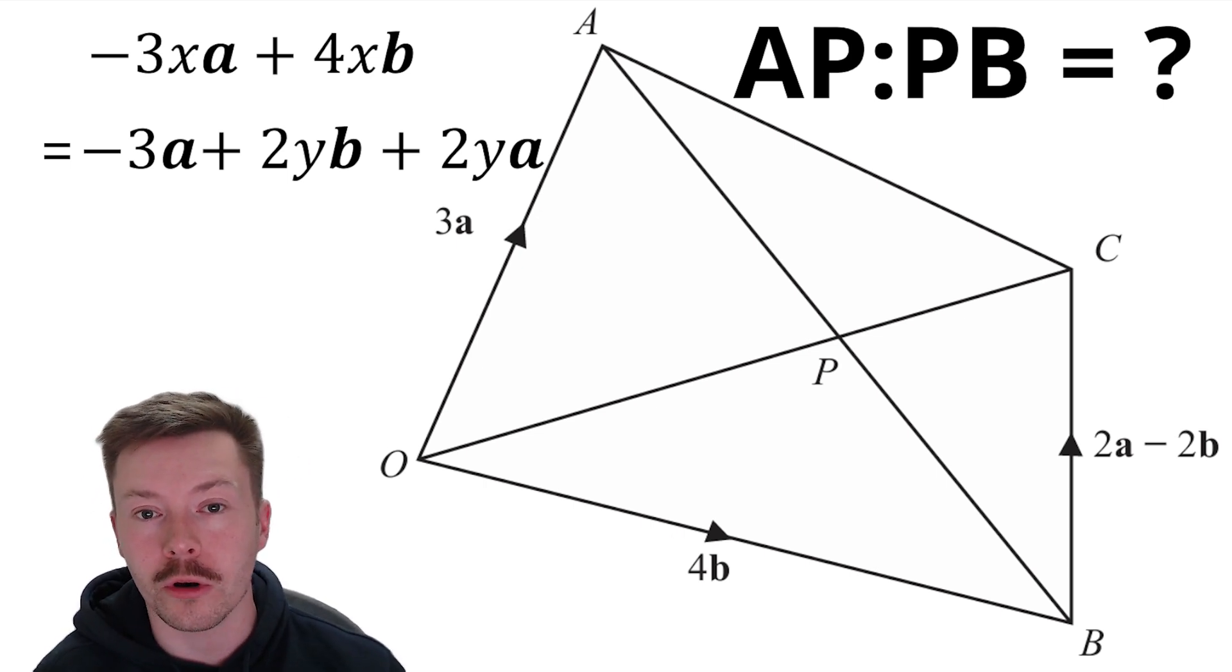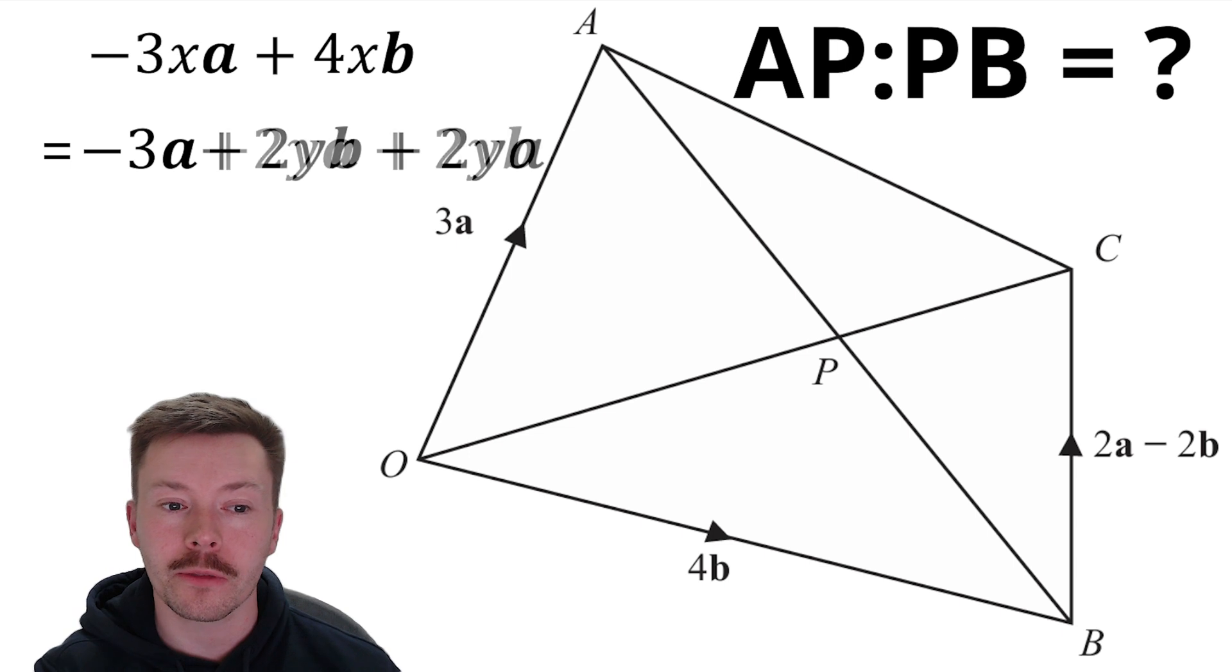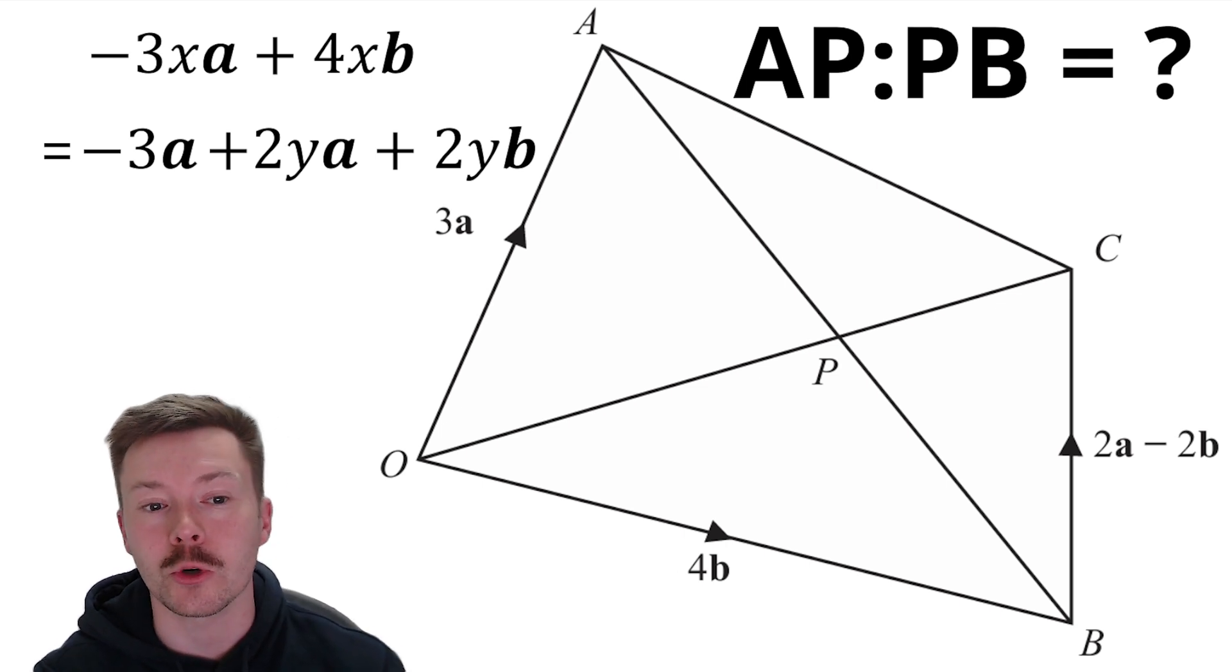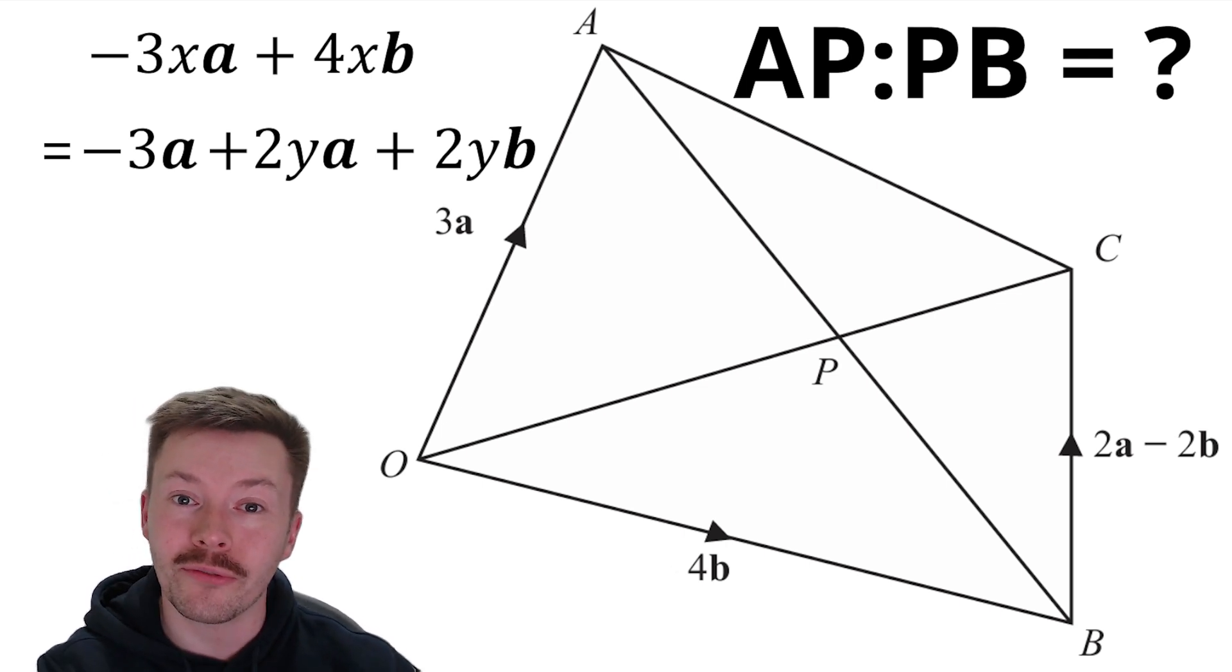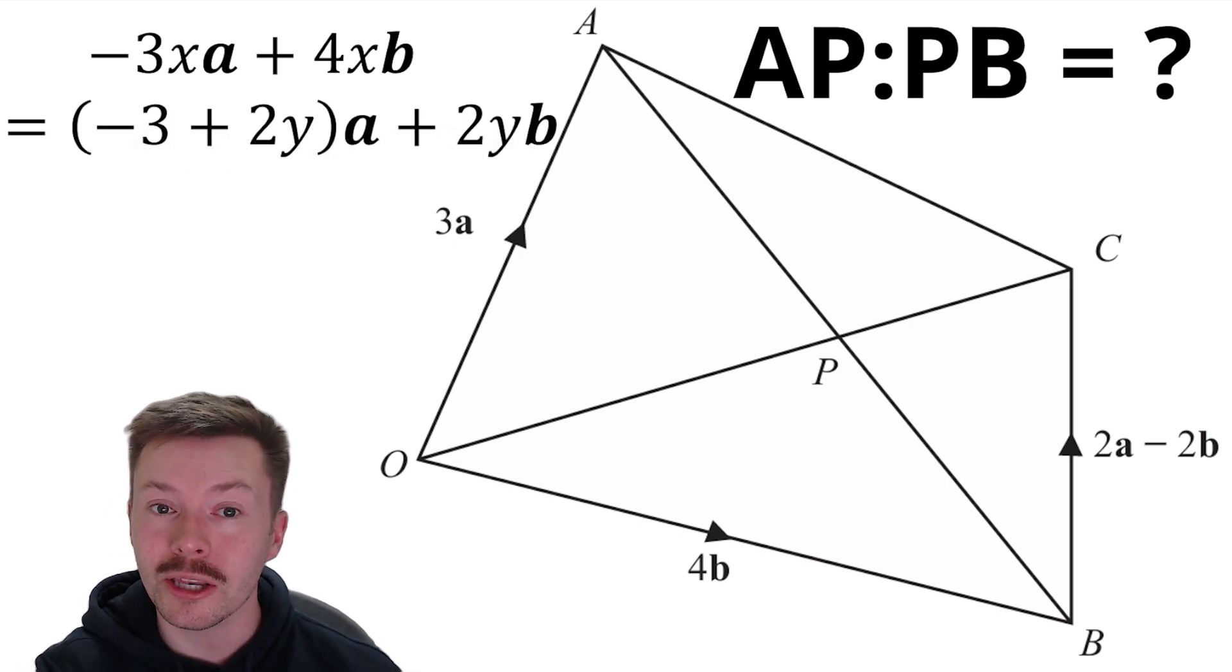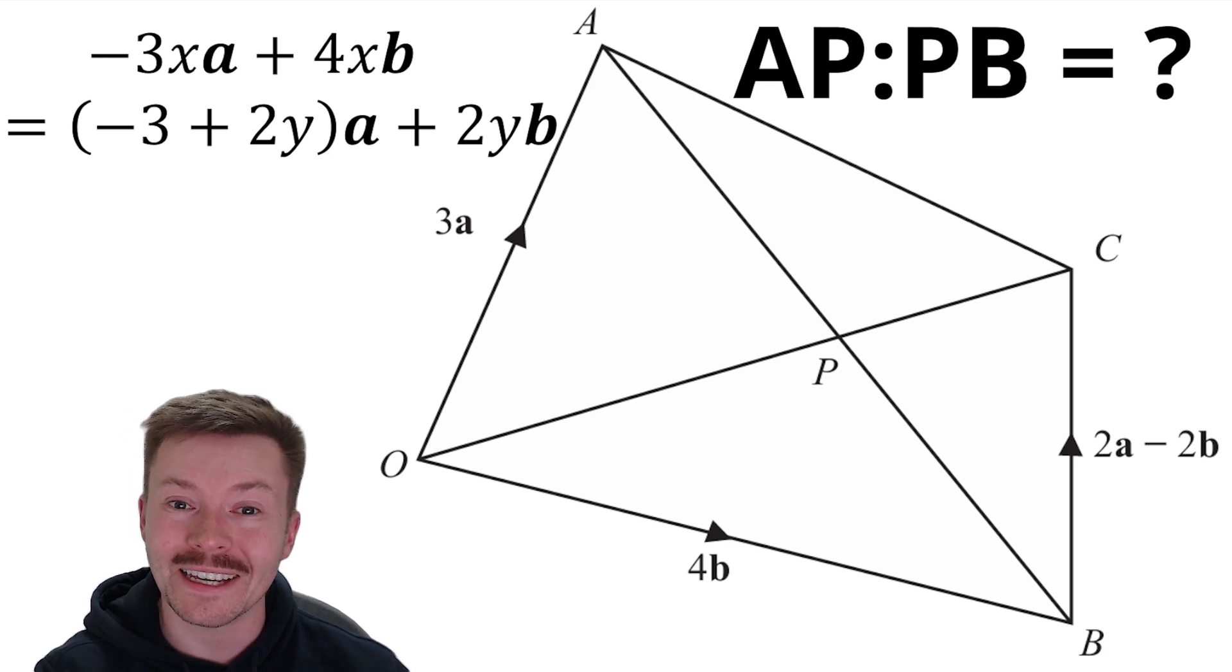And then we can collect our like terms here. So our A component of the vector terms. So we've got minus 3A on the bottom plus 2YA. I've just rearranged it with the addition swapped around the 2YA and the 2YB. And the reason I've done that is so I can factorize out the A component of the vector. So that gives minus 3 plus 2Y in brackets A plus 2YB.